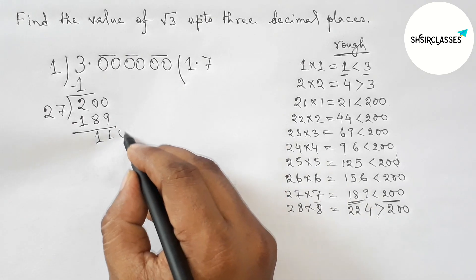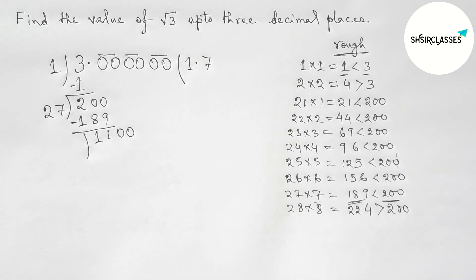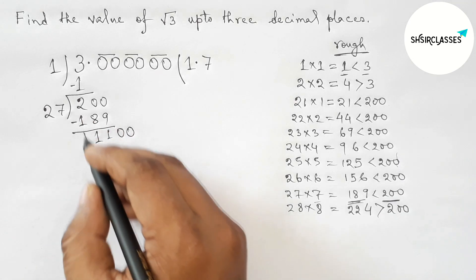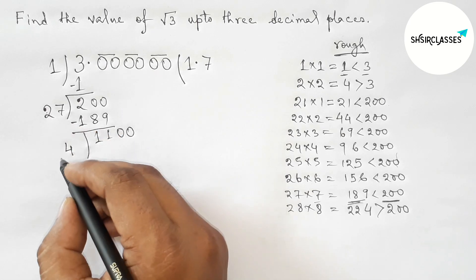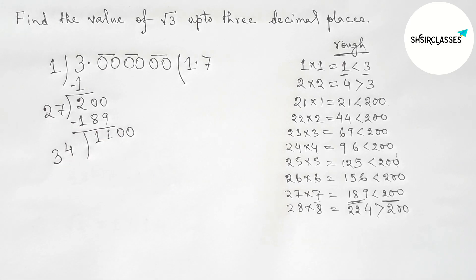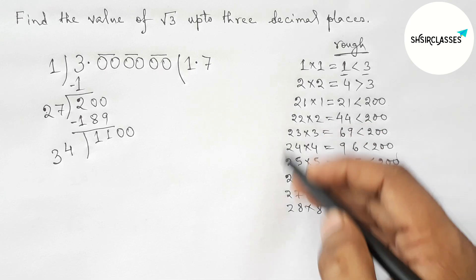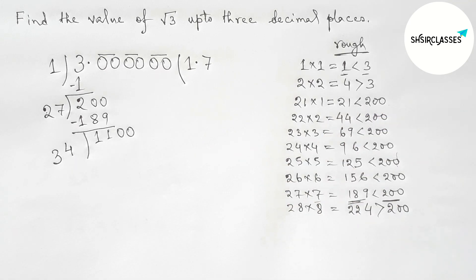Write down the second pair of zeros and draw the division line. Next: 7×7=49, carry 4; 7+4=11, carry 1; 2+1=3. So we get 34. Now, similarly, we have to take a number beside 34 and multiply by that number such that the result is less than 1100.